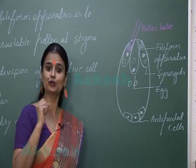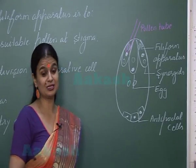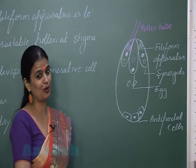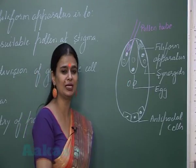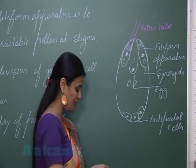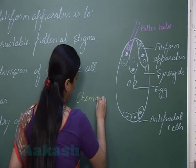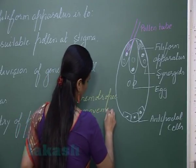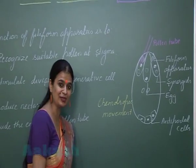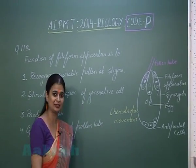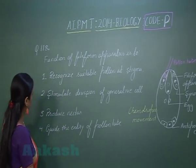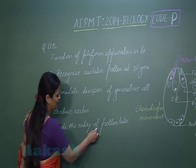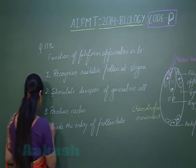The movement of the pollen tube is due to a chemical stimulus provided by the filiform apparatus. Such movement is called chemotropic movement. The chemical stimulus is given by the filiform apparatus present in the synergid. Therefore the right option is option number 4: guide the entry of pollen tube inside the synergid in the embryo sac.